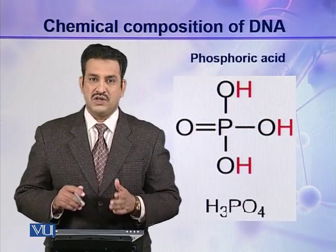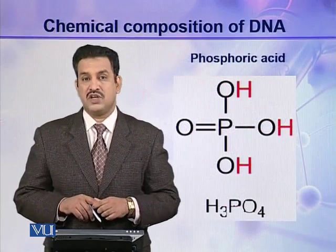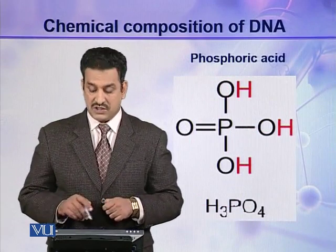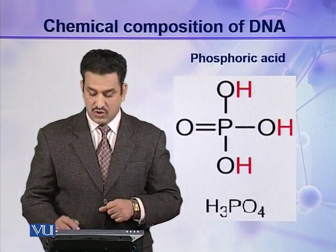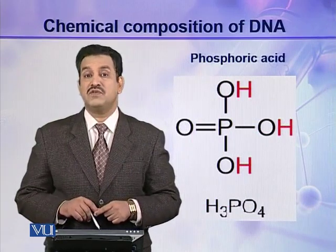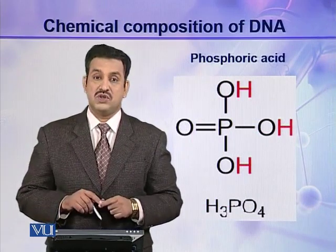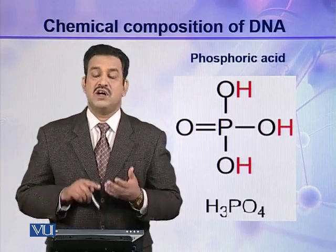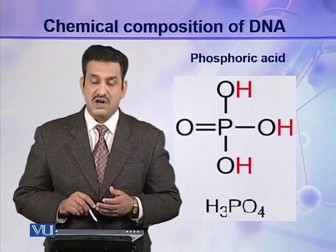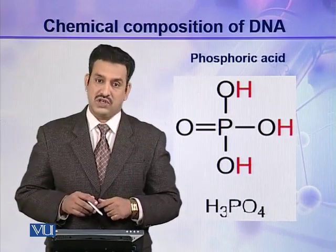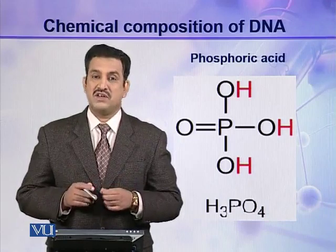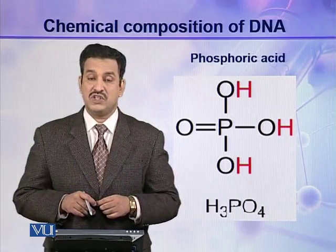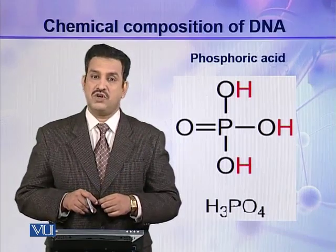The third component present in a deoxyribonucleotide is phosphoric acid. Phosphoric acid has three hydroxyl groups, so it can form three bonds with other molecules. All three components — deoxyribose sugar, a nitrogenous base, and phosphoric acid — combine together to make a deoxyribonucleotide, which is the building block of the DNA molecule.